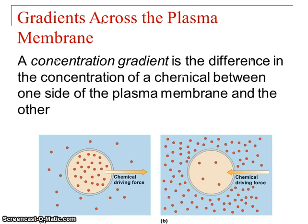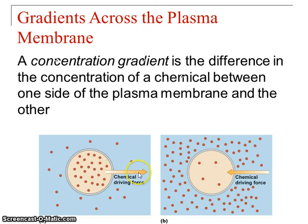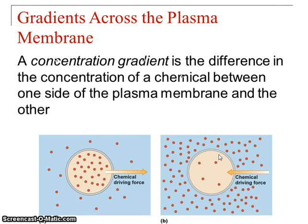Now we're going to look at how molecules want to move. Molecules always want to go towards disorder — this idea of entropy — meaning they want to spread out and be as random as possible. They go from areas where they're more highly concentrated to where they're less concentrated. So if there's high concentration on the outside and low on the inside, a molecule will want to move inside.